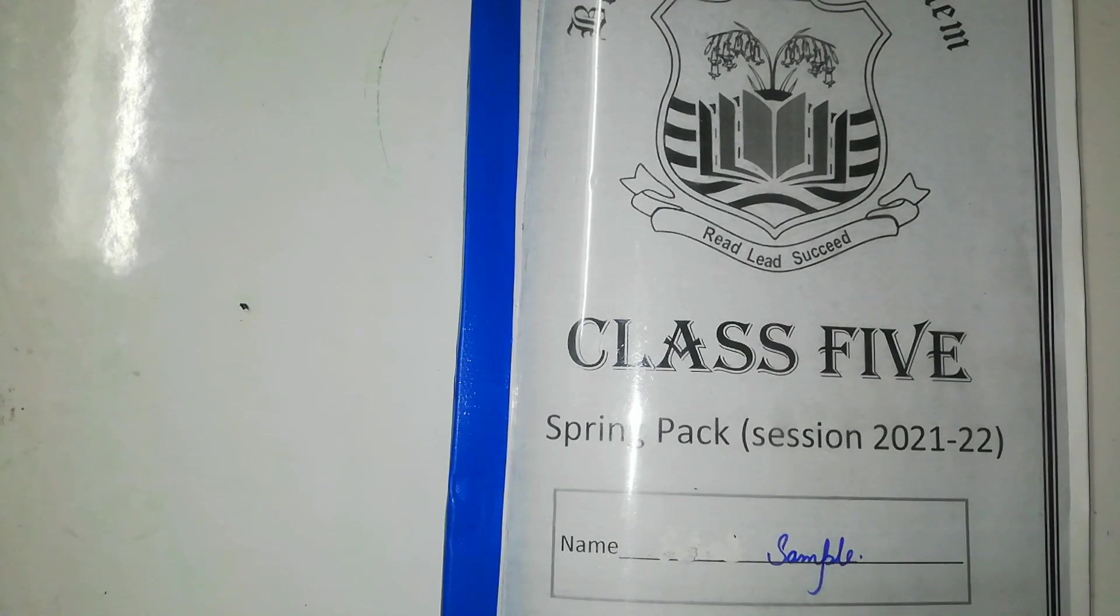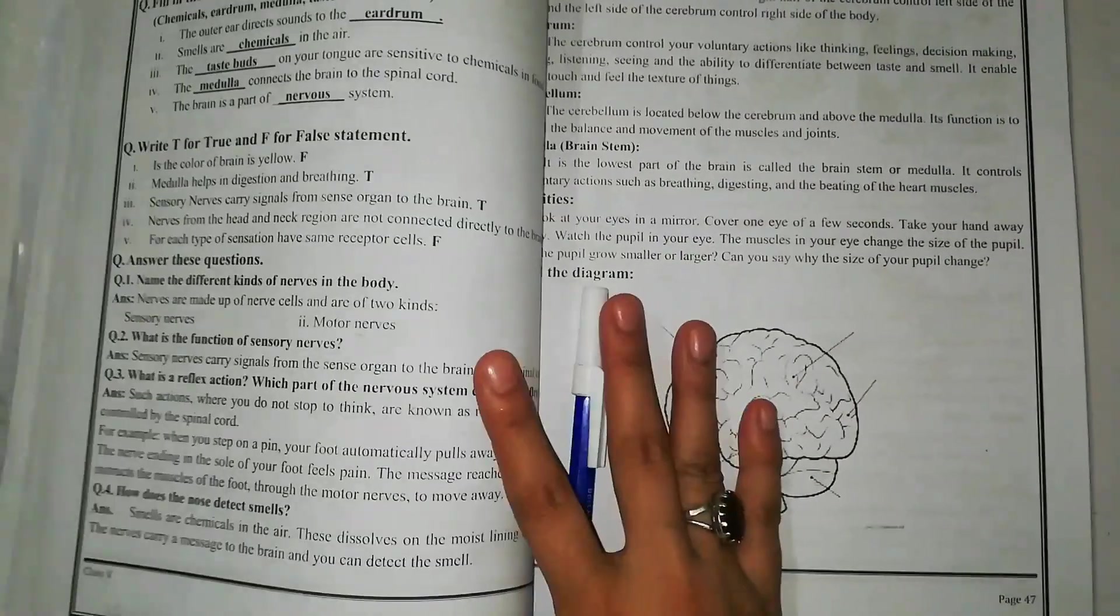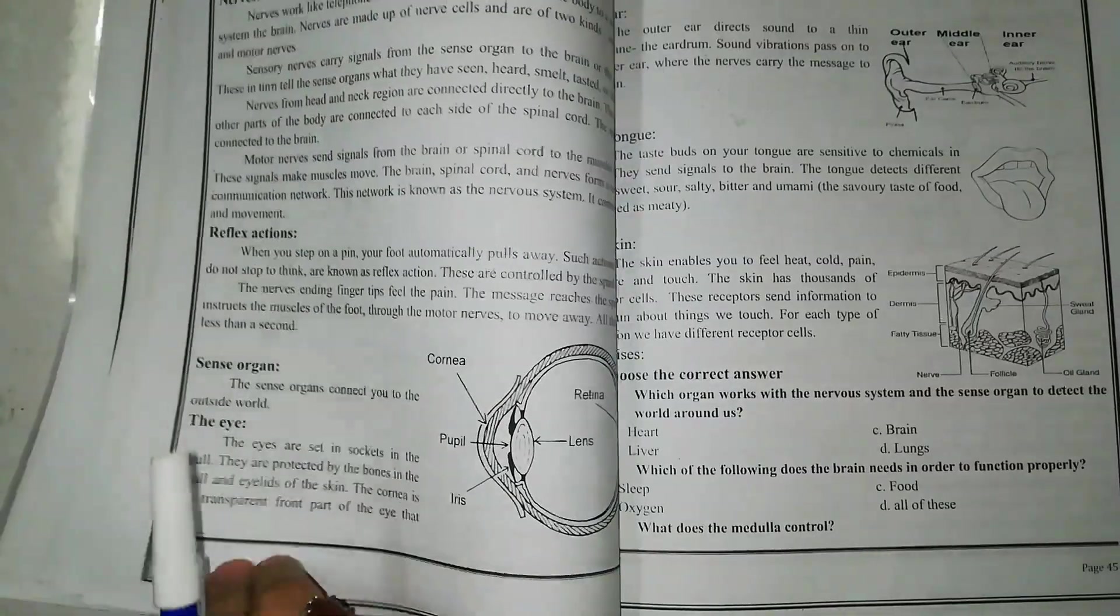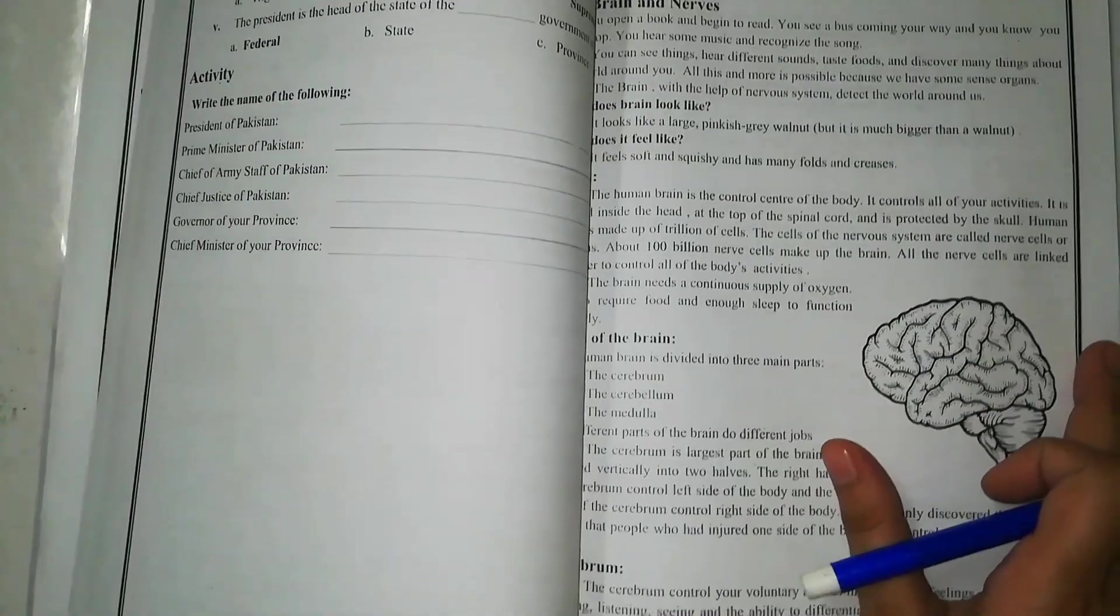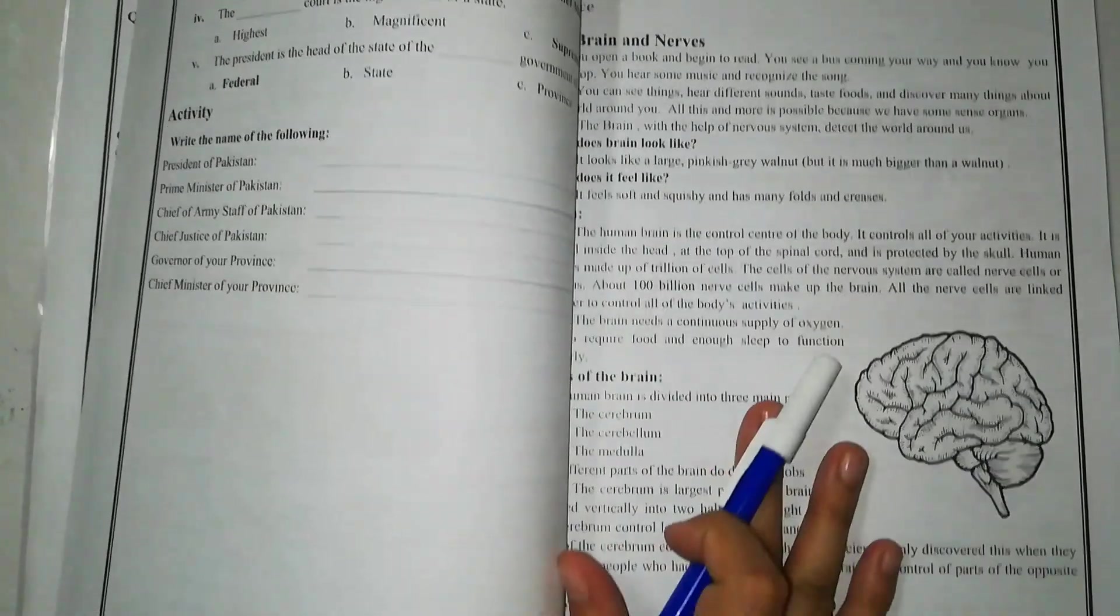Students, it's Science Lecture. Open your Spring Pack, page number 46, unit number 1: The Brain and Nerves.